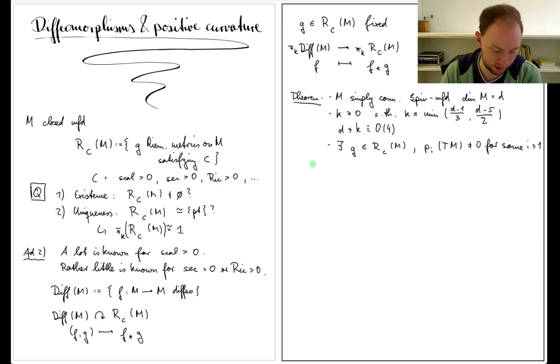The statement is that the induced map from π_{k-1}(Dif(M)) to π_{k-1}(Rc(M)) is non-trivial if I consider the rationalization of those groups.